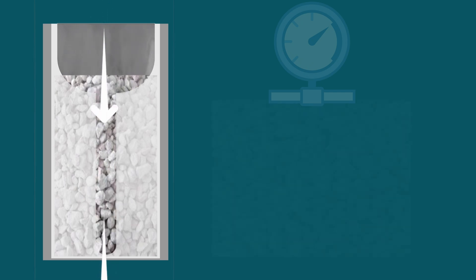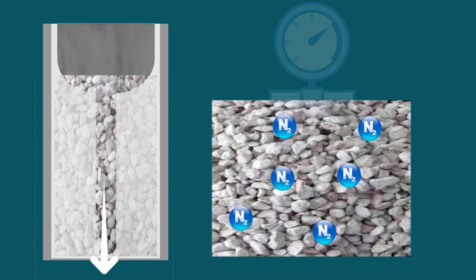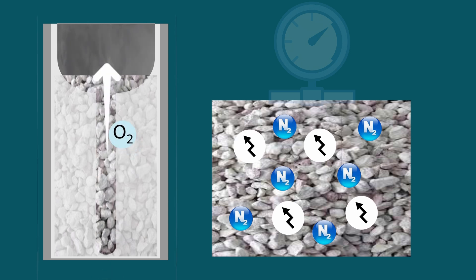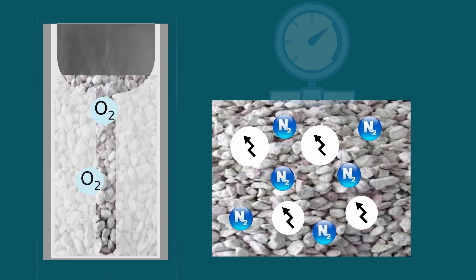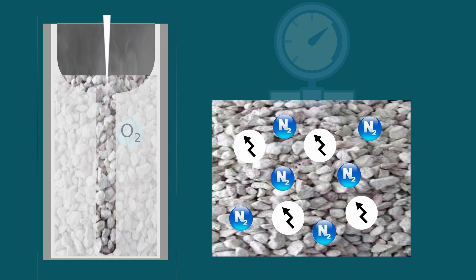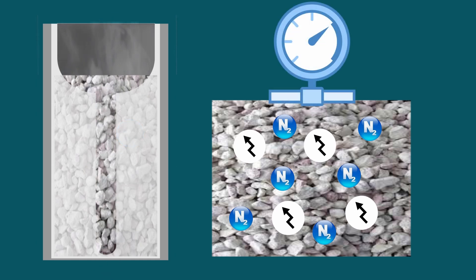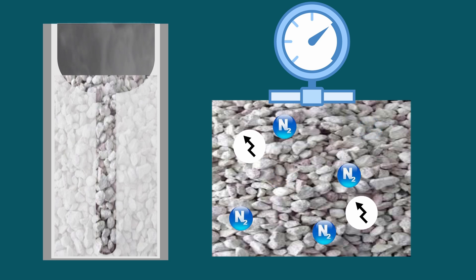The oxygen concentrator compresses the air and passes it over the zeolite, forcing the zeolite to adsorb nitrogen from the air. It then collects the remaining gas, which is mainly oxygen. Nitrogen is then desorbed from the zeolite under reduced pressure for further removal.